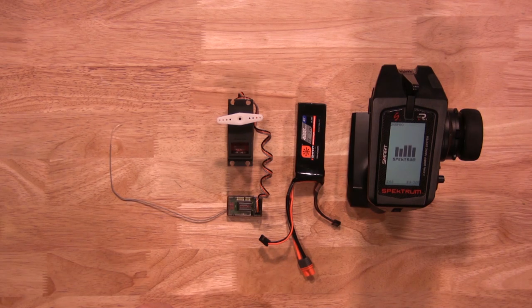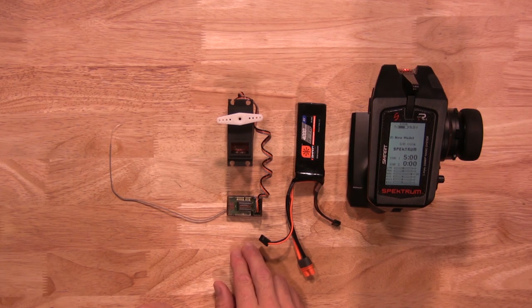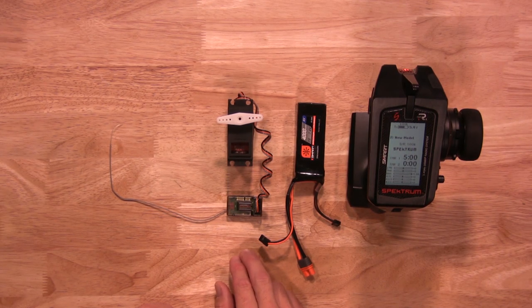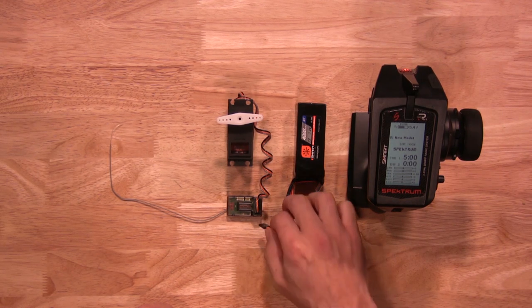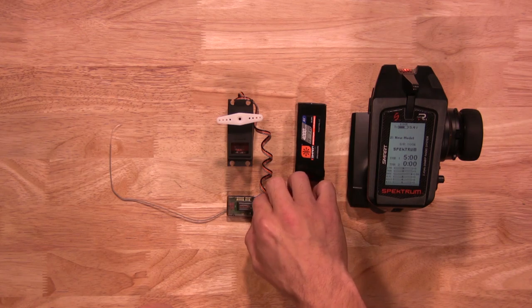Once your transmitter is powered up, now you put the receiver in bind mode. To do so, you need to make sure the receiver is sitting the exact same way it sits as the vehicle is in operation. Once you have that, go and power it up. Again, make sure the polarity is correct while powering it up.